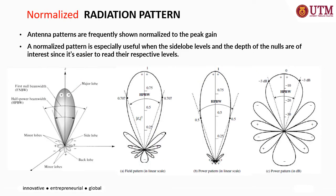Another useful term in antenna design is the normalized radiation pattern, in which the pattern shown is normalized to the peak gain. So the maximum radiation is 1. The normalized pattern is especially useful when the side lobe levels and the depth of the nulls are of interest, making it much easier to analyze and read through the pattern labels.